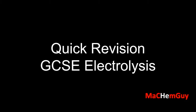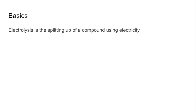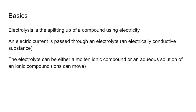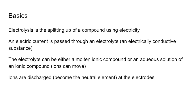In this video I'm going to revise electrolysis for GCSE chemistry. We'll start with some basics. Electrolysis is the splitting up of a compound using electricity, so an electric current is passed through what's called an electrolyte, which is an electrically conductive substance. That electrolyte can either be a molten ionic compound or an aqueous solution of an ionic compound. These work because the ions can move.